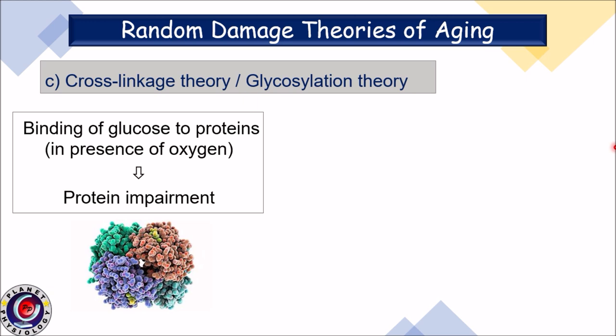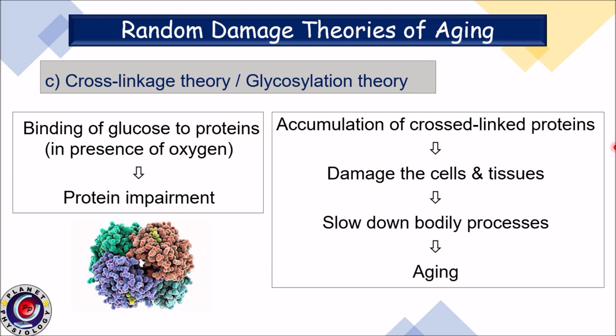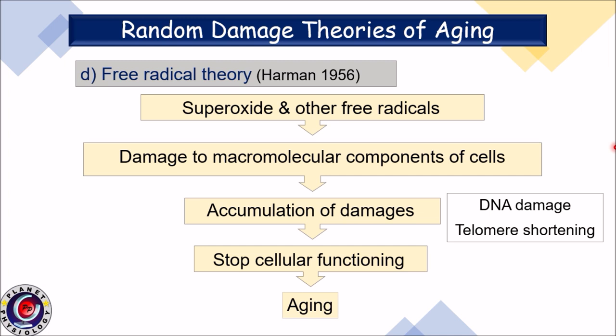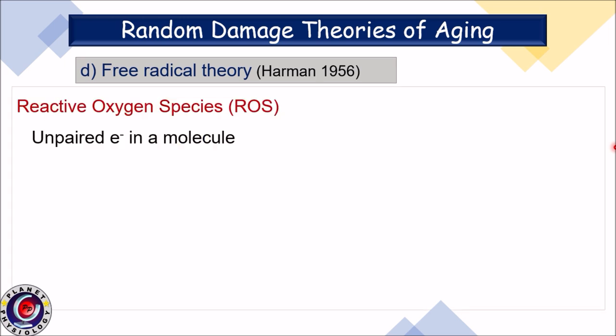The third damage theory is the cross-linkage theory, or glycosylation theory. According to this theory, glucose combines with proteins in the presence of oxygen and causes protein impairment by establishing cross-linking. Accumulation of such cross-linked proteins damages cells and tissues and slows down various bodily processes, leading to aging. Next is the free radical theory by Harman. According to this theory, free radicals damage macromolecular components in cells, and the accumulation of this damage stops cells from functioning, leading to aging. It is also proven that free radicals damage DNA and shorten telomeres, accelerating aging.